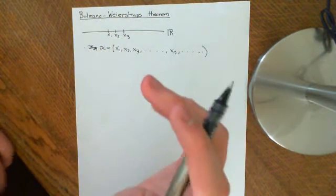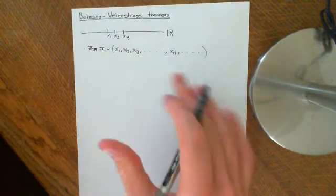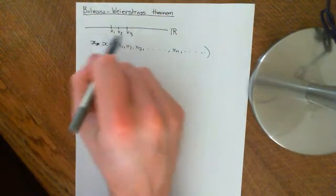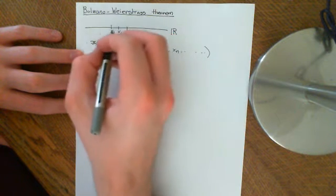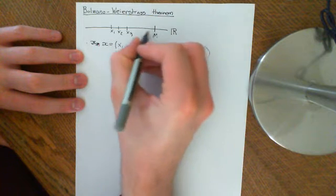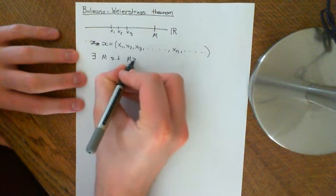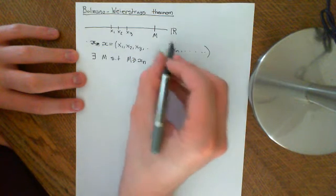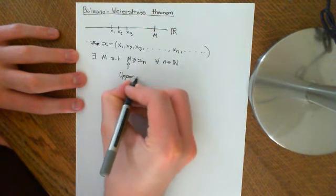There is a basic condition for the Bolzano-Weierstrass theorem to apply: the sequence needs to be bounded. The meaning of a sequence being bounded in the real line is exactly the same as the meaning if you use the metric space definitions. A nice way of thinking of bounded in the real line is that there is some number big M which is greater than all the terms — there exists a big M such that M is greater than or equal to xn for all n in the natural numbers. So big M is called an upper bound for the sequence.